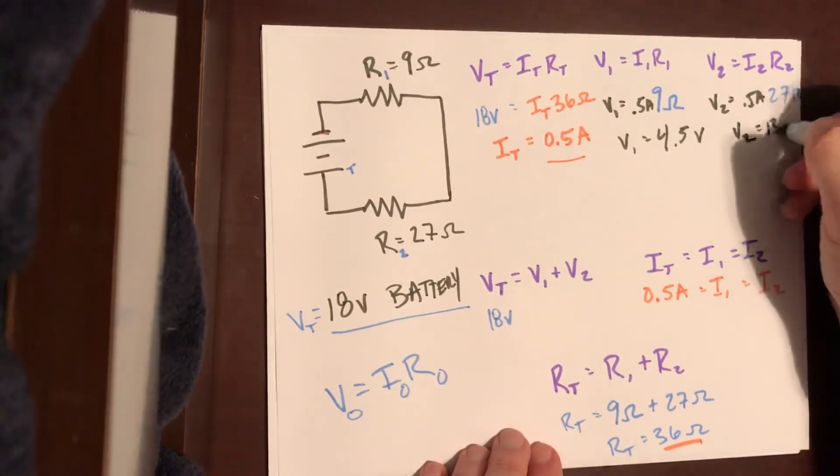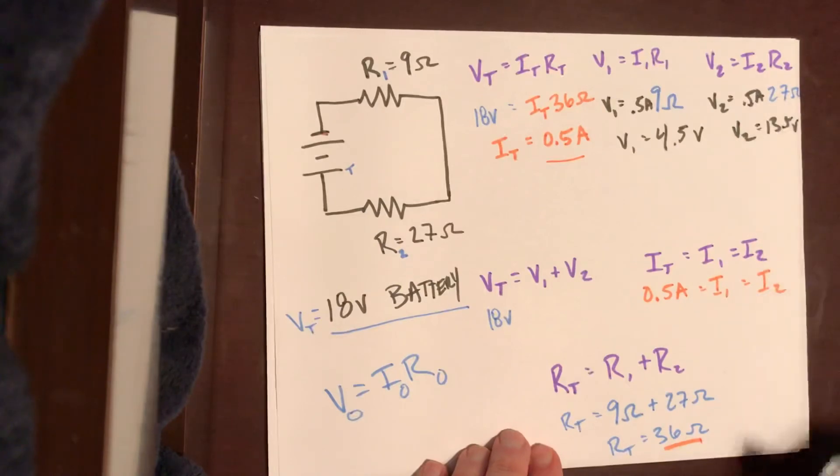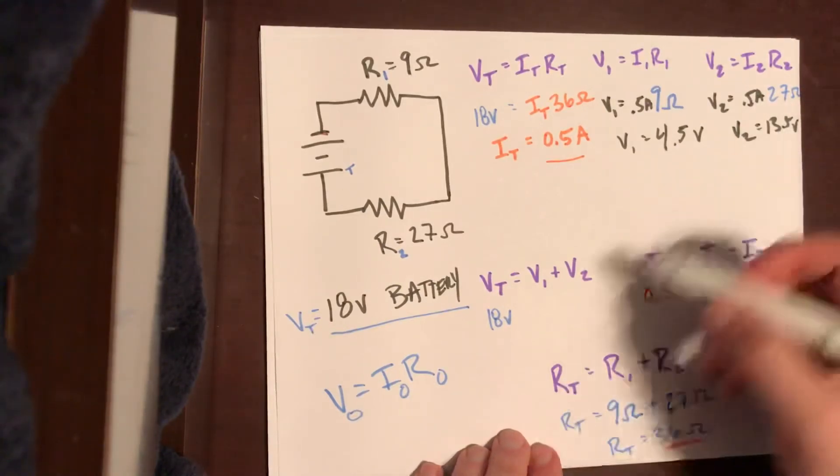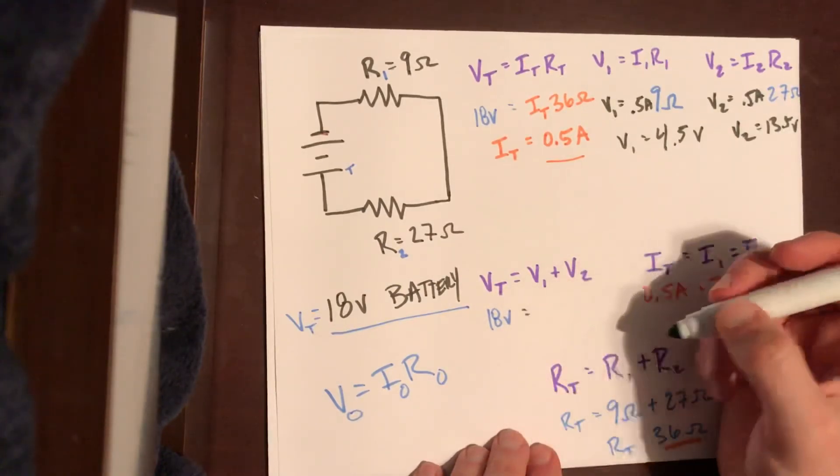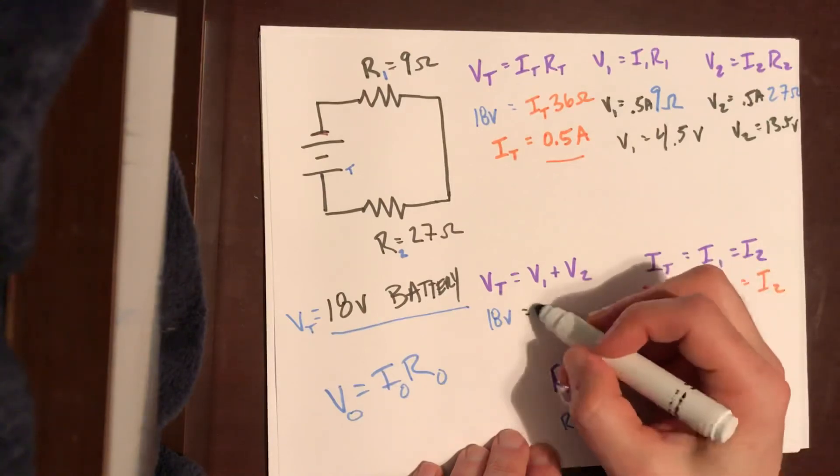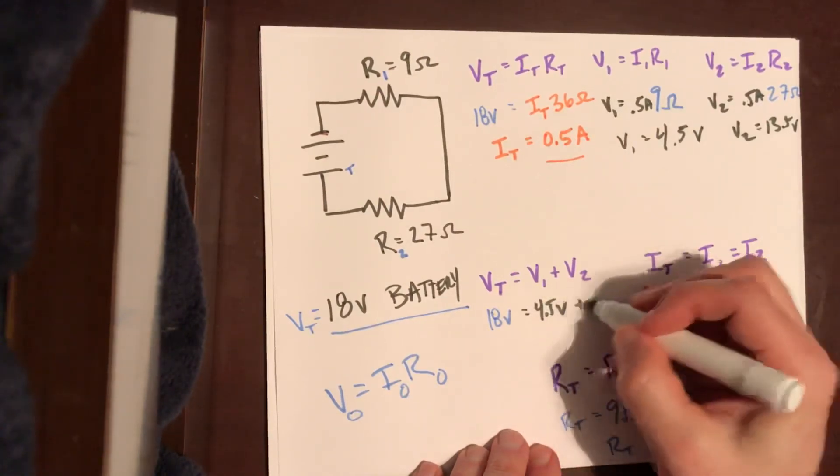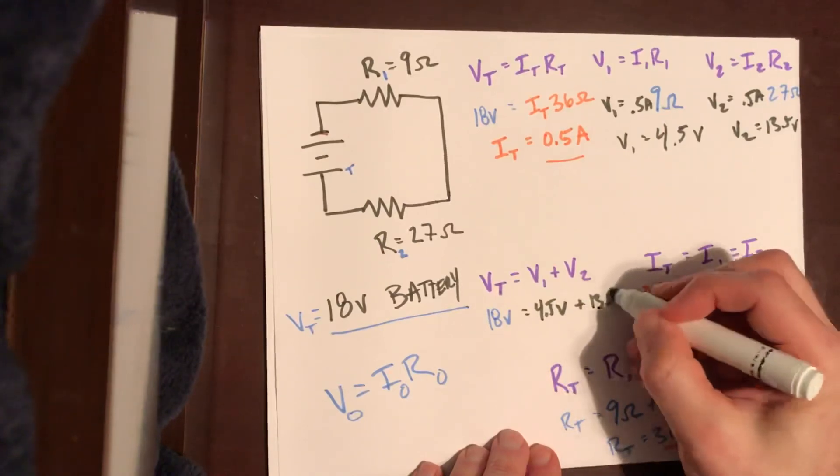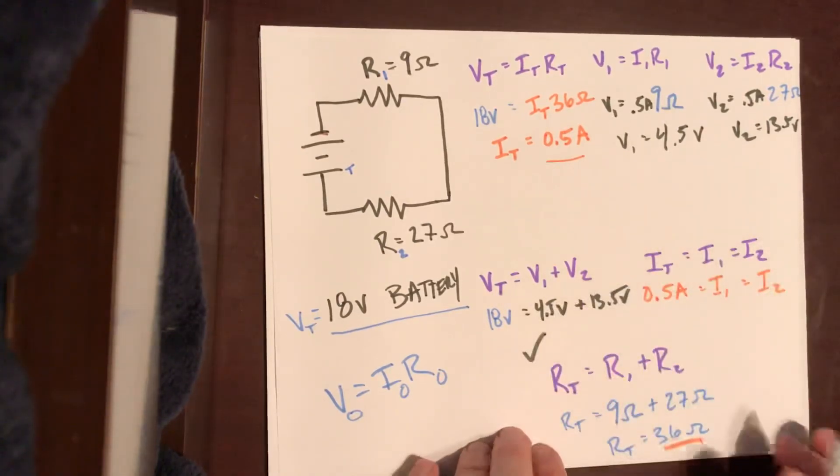I can put each of these in down here and this will ultimately be my check. So I have to say to myself, does 4.5 volts plus 13.5 volts equal 18 volts? And it does, so there's our check. So right now we have just a whole problem done out from start to finish of a series circuit.